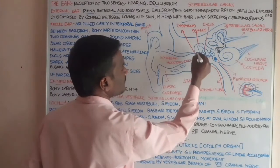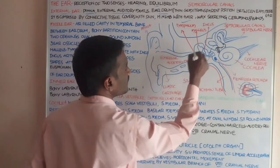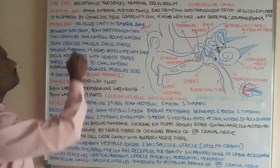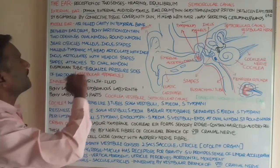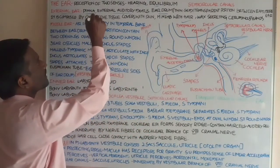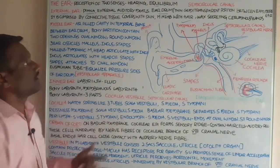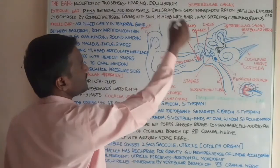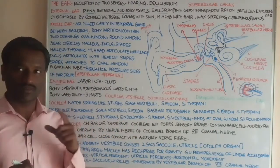The eardrum is the thin semi-transparent portion between the external auditory meatus and the middle ear. It separates the external auditory meatus from the middle ear. The eardrum or tympanum is composed of connective tissue and covered with skin and mucous membrane.